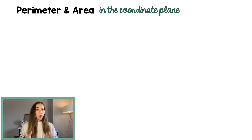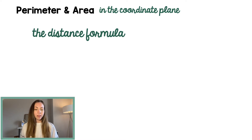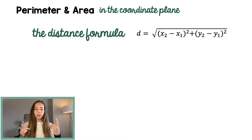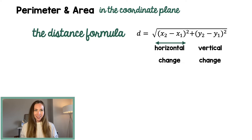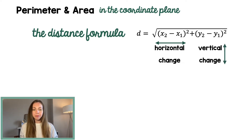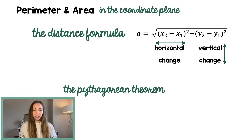In the coordinate plane, we begin using some tools such as the distance formula to find the perimeter. Here's our distance formula. It compares the horizontal change — the change in our x's — to the vertical change, which is the change in our y values. This is very strongly related to the Pythagorean theorem.